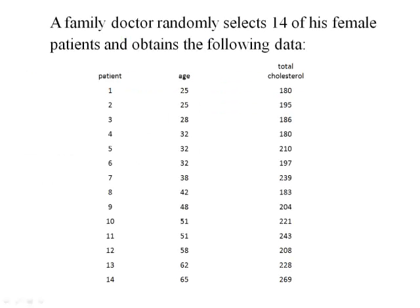In this section, we'll use an example data set, and we've made this data available to you so you can pull it up and follow along. In this data set, we have a family doctor who's randomly selected 14 of his female patients, and he has the following data. On each of these patients, we've actually got two measures — an age and a cholesterol measure for each patient.